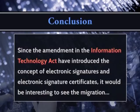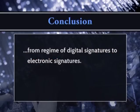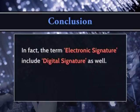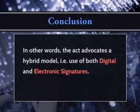Since the amendments in the Information Technology Act have introduced the concept of electronic signatures and electronic signature certificates, it is interesting to see the migration from the regime of digital signatures to electronic signatures. In fact, the term electronic signature includes digital signature as well. In other words, the Act advocates a hybrid model with the use of both digital and electronic signatures. As stated in the beginning, the electronic signature certificate is an important instrument of trust identifying the subscriber over the networks. This instrument of trust is bound to play an important role not only in facilitating e-commerce at both macro and micro levels, but also in providing efficient e-governance platforms. Thank you viewers for watching this program.